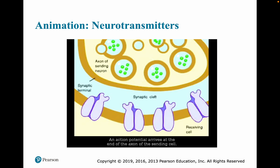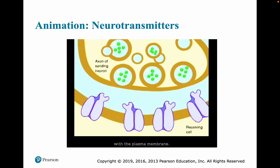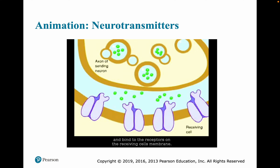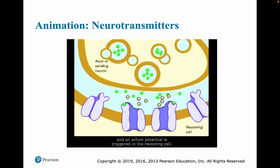An action potential arrives at the end of the axon of the sending cell. This causes chemical changes that make vesicles containing a neurotransmitter fuse with the plasma membrane. The neurotransmitter molecules spill out into the synaptic cleft, diffuse across, and bind to receptors on the receiving cell's membrane. The binding of neurotransmitters to receptors causes the attached ion channels to open. Depending on the type of neurotransmitter, receptors, and channels involved, this may excite or inhibit the receiving cell. With excitation, sodium ions rush in, changing the polarity of the membrane, and an action potential is triggered in the receiving cell.